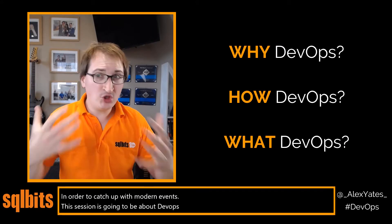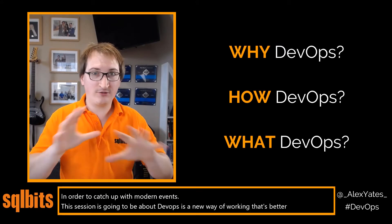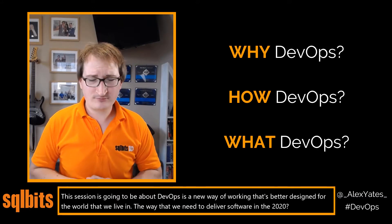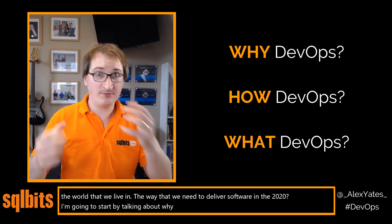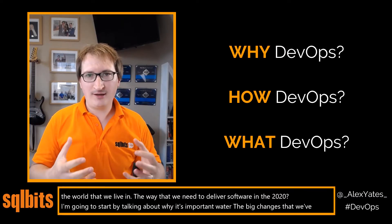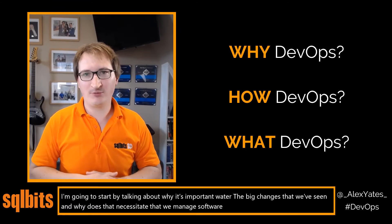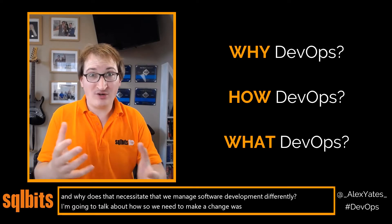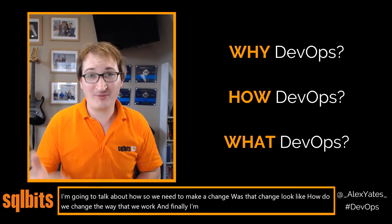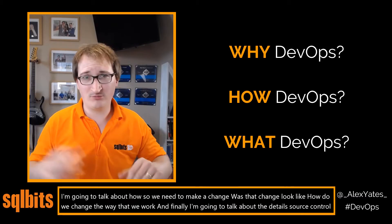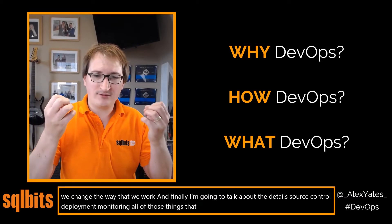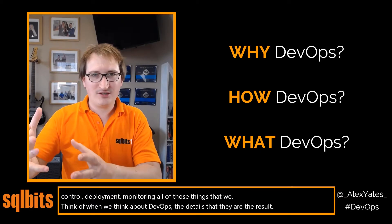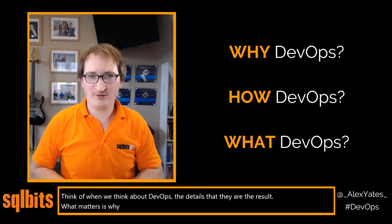This session is going to be about DevOps — a new way of working better designed for the world we live in and the way we need to deliver software in 2020. I'm going to start by talking about why it's important: what are the big changes we've seen, and why does that necessitate managing software development differently? Then I'll talk about how we change the way we work. And finally, the details — source control, deployment, monitoring — all those things we think of when we think about DevOps. They're the details; they're the result. What matters is why we're here in the first place.